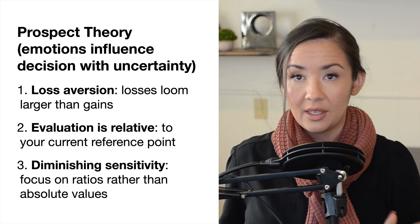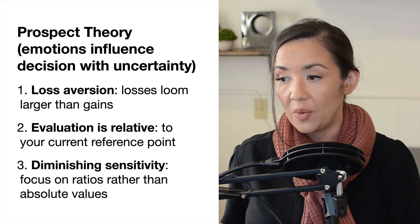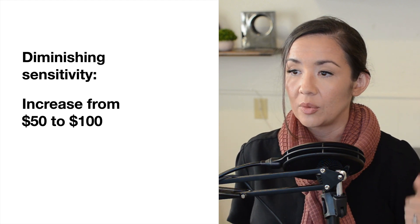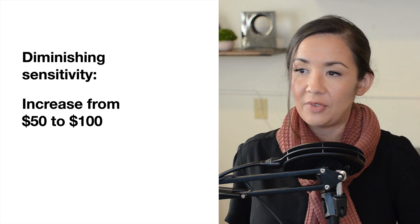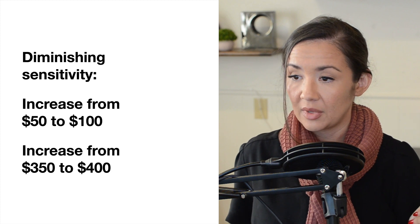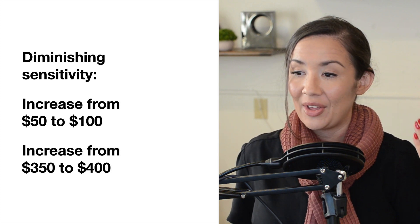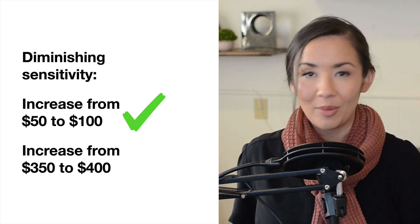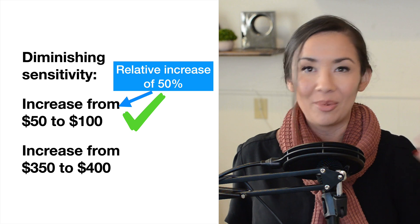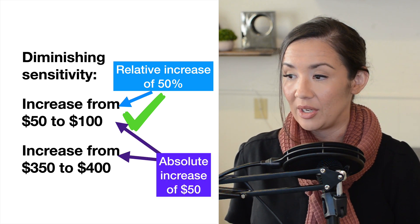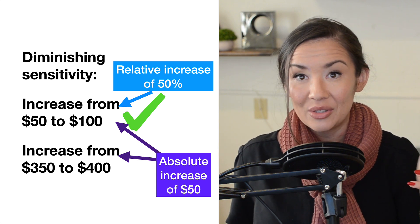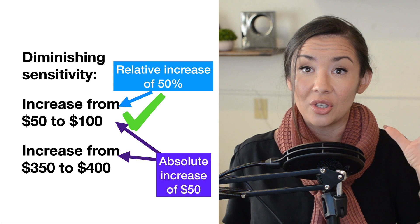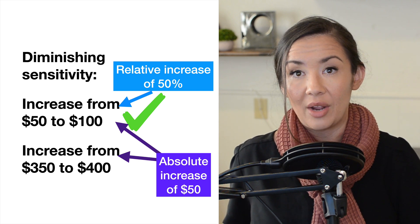The last thing I'm going to talk about in this lecture set is diminishing sensitivity, which is the focus on ratios rather than absolute values. Let's take a scenario where we are increasing our income - we have $50 and we increase it to $100. Now let's look at a scenario where we have $350 and we increase it to $400. Which one feels better to you in this case? Probably the first one, right? We're essentially doubling our money. We have a massive increase compared to the one at the bottom. But the absolute increase is just $50. We're gaining $50 in either case. But it feels better when it is a larger relative amount that we're increasing rather than a smaller relative amount.